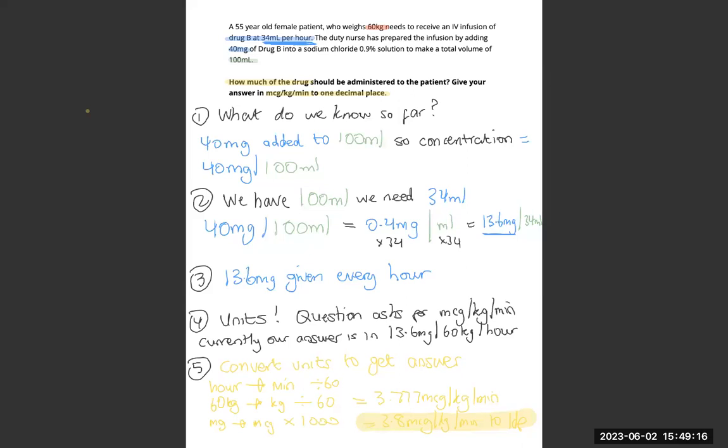Hello, everyone. Welcome back to question three. So the answer for this question is 3.8 micrograms per kilogram per minute.